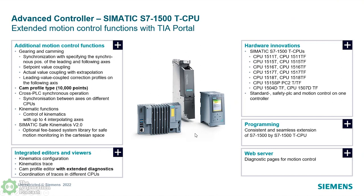While all the S7-1200 can do some simple stuff and the S7-1500 can do a little bit more advanced stuff, you really need the S7-1500T or technology CPUs to do these advanced things. Everything in that box of additional motion control functions — gearing and camming, cam profile, cross-PLC synchronization, kinematics, and safe kinematics — are all T, technology CPU features. Those are the features you get when you upgrade from the standard S7-1500 to the T or technology CPU, which is a CPU designed for high-end motion applications.